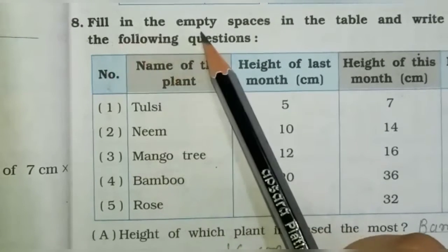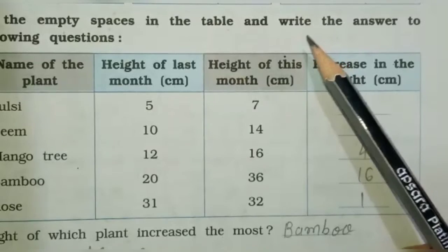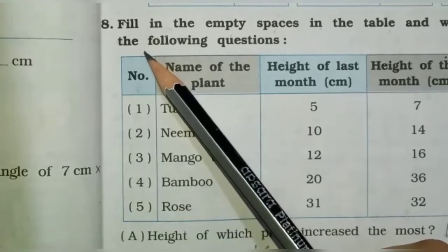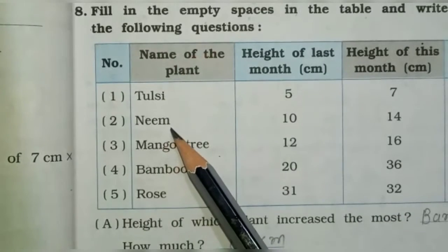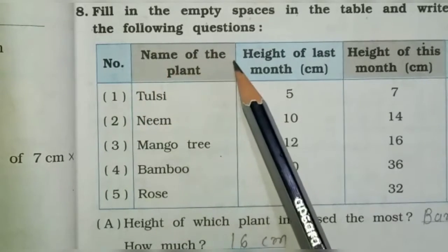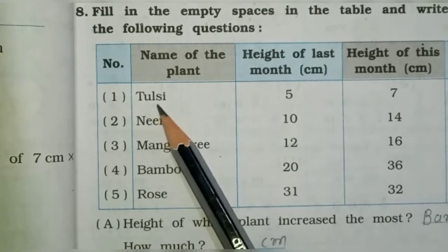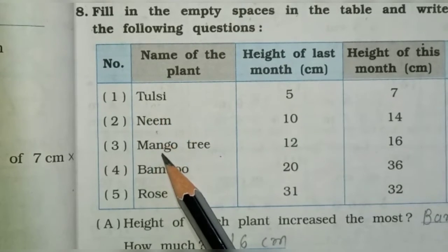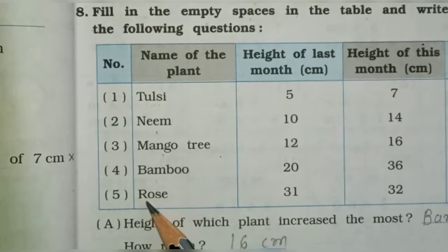Fill in the empty space in the table and write the answer to the following questions. Here in table column C we have the name of the plant. The first plant is tulsi, second is neem, third is mango tree, fourth is bamboo, and the last one, number five, is rose.